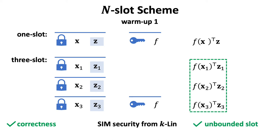Furthermore, this scheme supports unbounded slot. Recall that we decrypt all sub-ciphertexts using the same secret key, and this procedure can continue if we have more sub-ciphertexts. However, this is insecure at all. Partial decryption results immediately leak intermediate summands of the attribute weighted sum. Remember, we only want to reveal the sum of them.